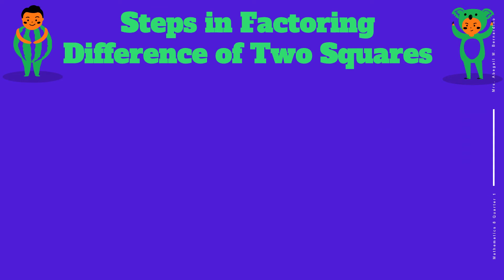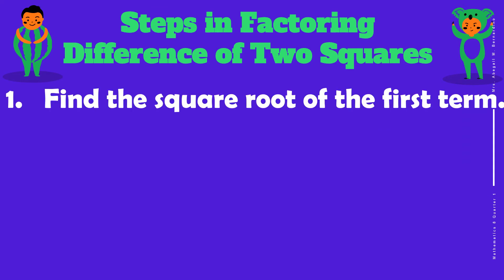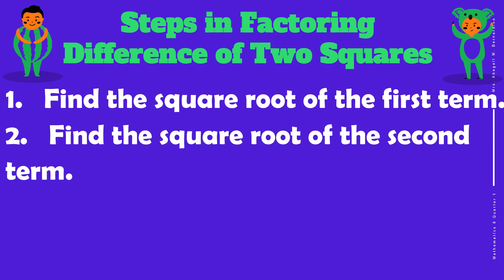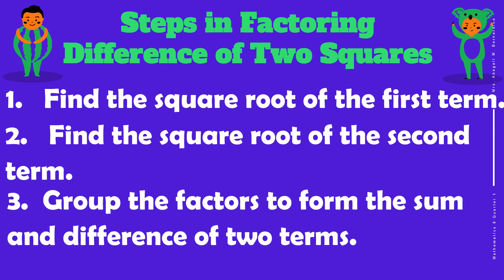Here are the steps in factoring difference of two squares. First, find the square root of the first term. Second, find the square root of the second term. Third, group the factors to form the sum and the difference of two terms.